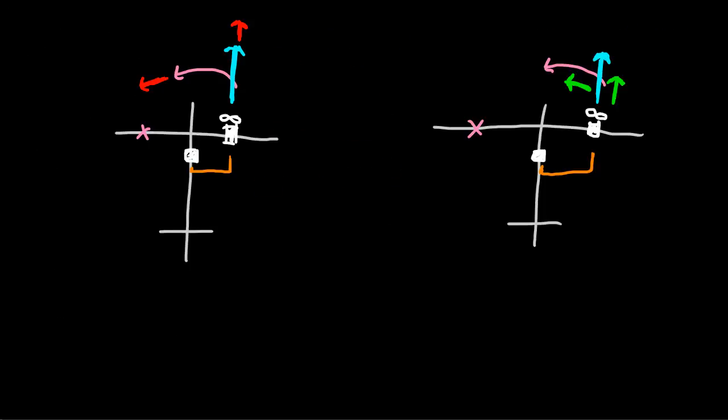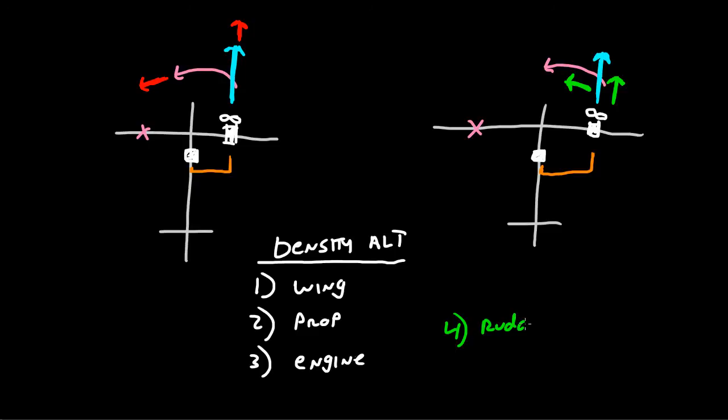What about density altitude? Well, as you know, density altitude affects a few things. It affects number one, the wing. Number two, the prop. Number three, the engine. Notice that what it does not affect is number four, the rudder. Now, that's technically a lie because the rudder is affected by changes in density altitude. It's an aerodynamic control surface, and of course, all aerodynamic control surfaces are affected by changes in altitude.